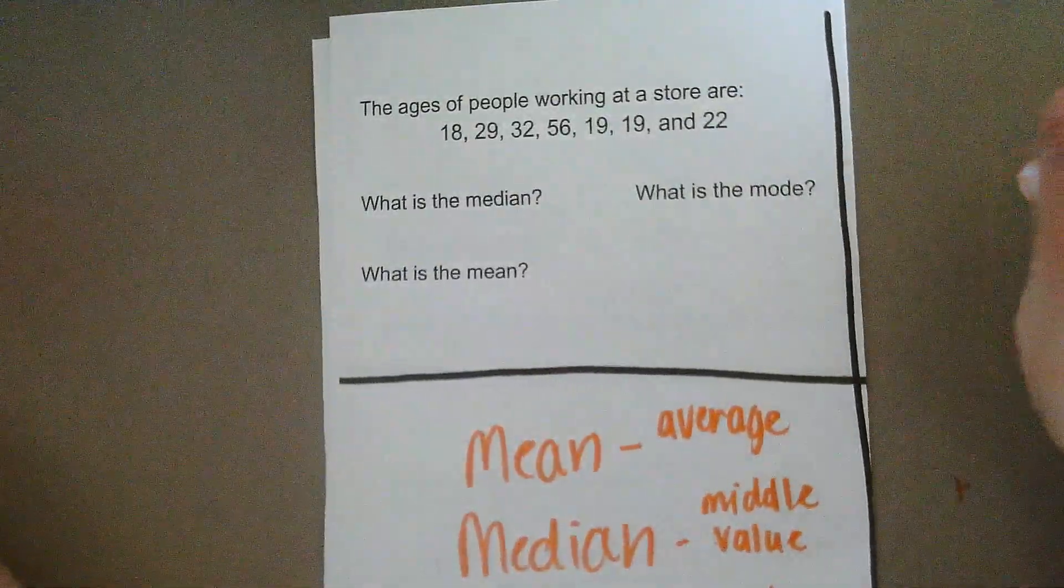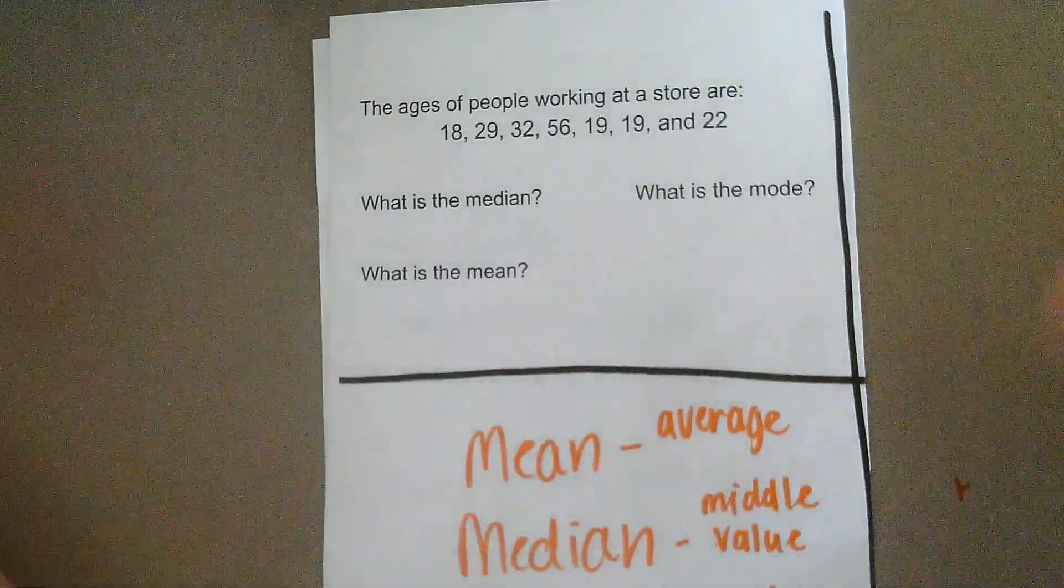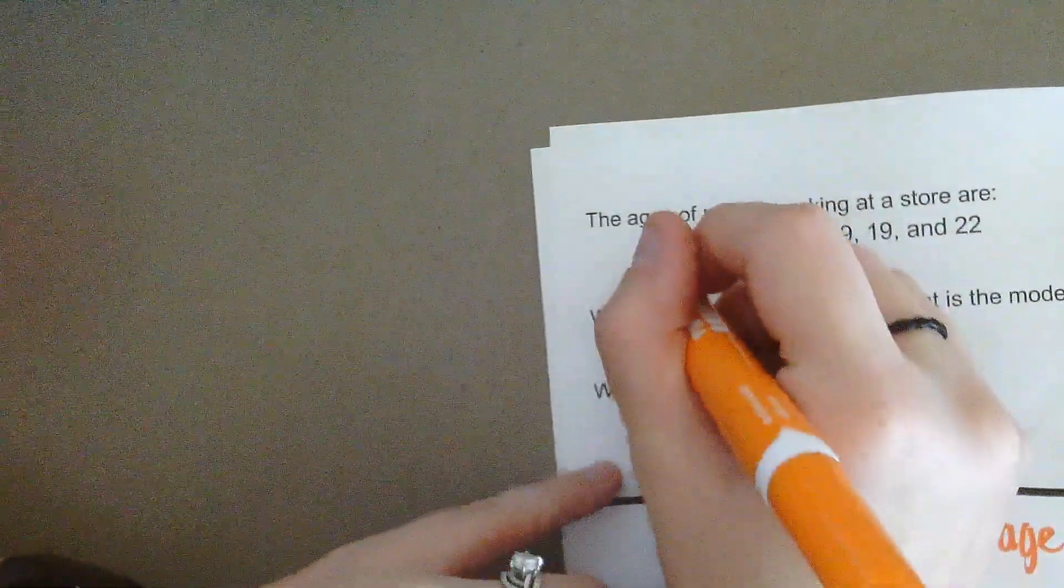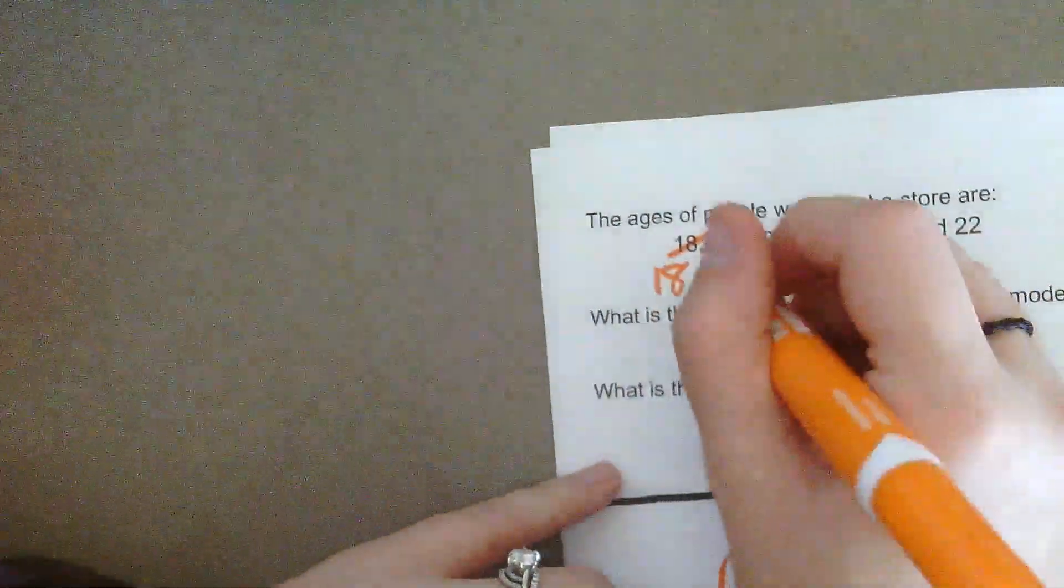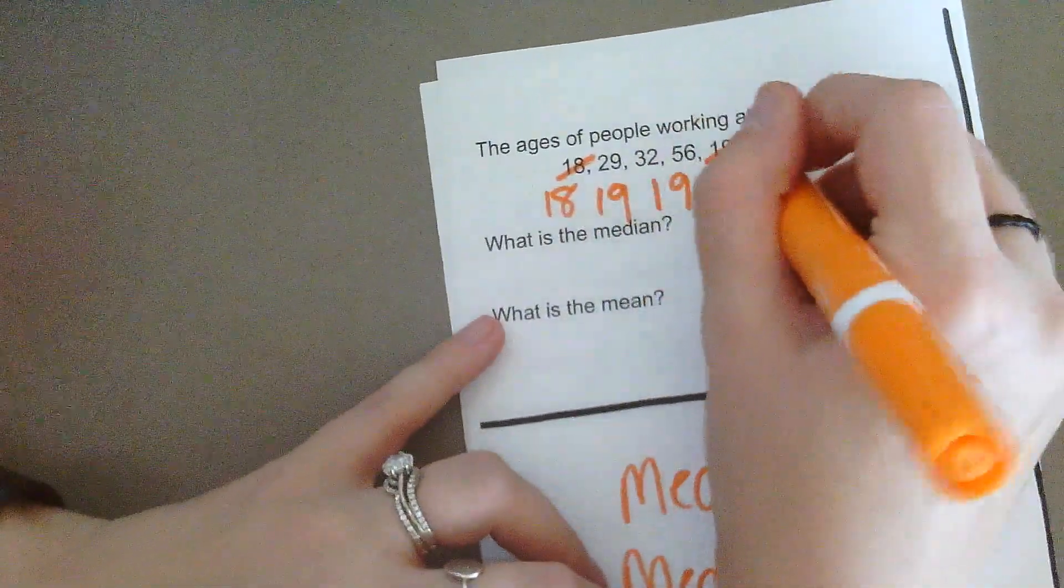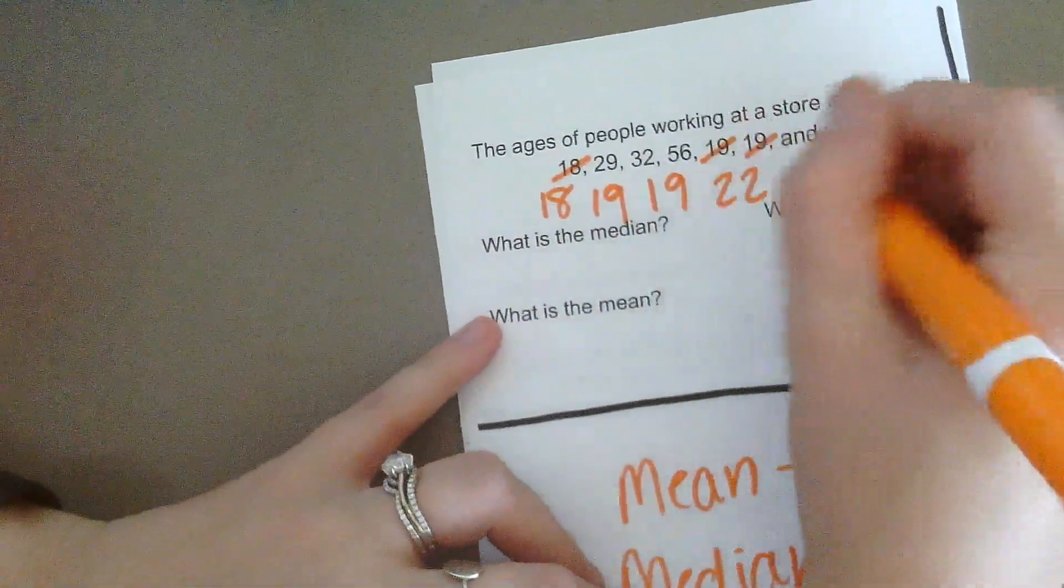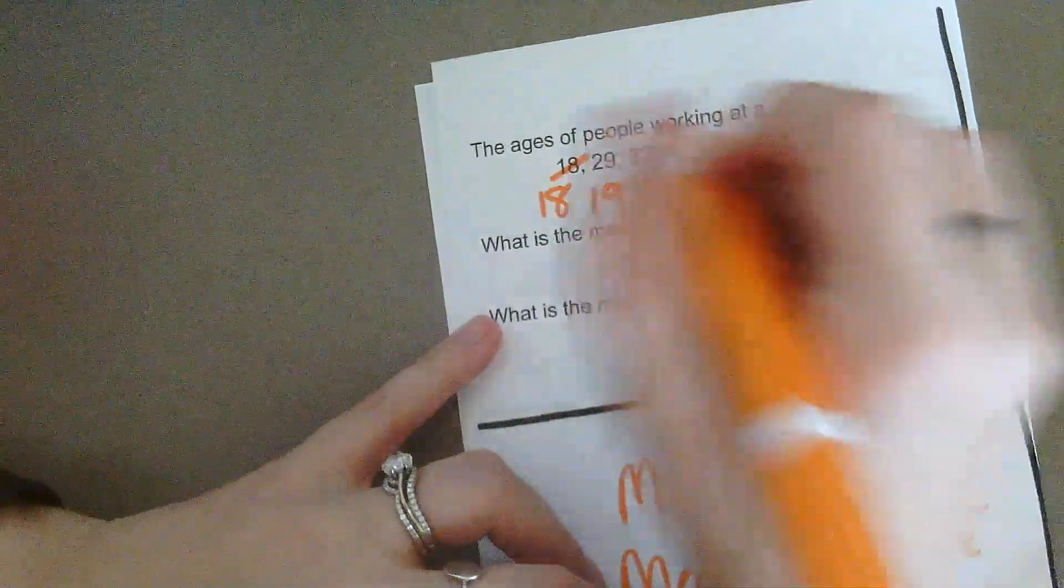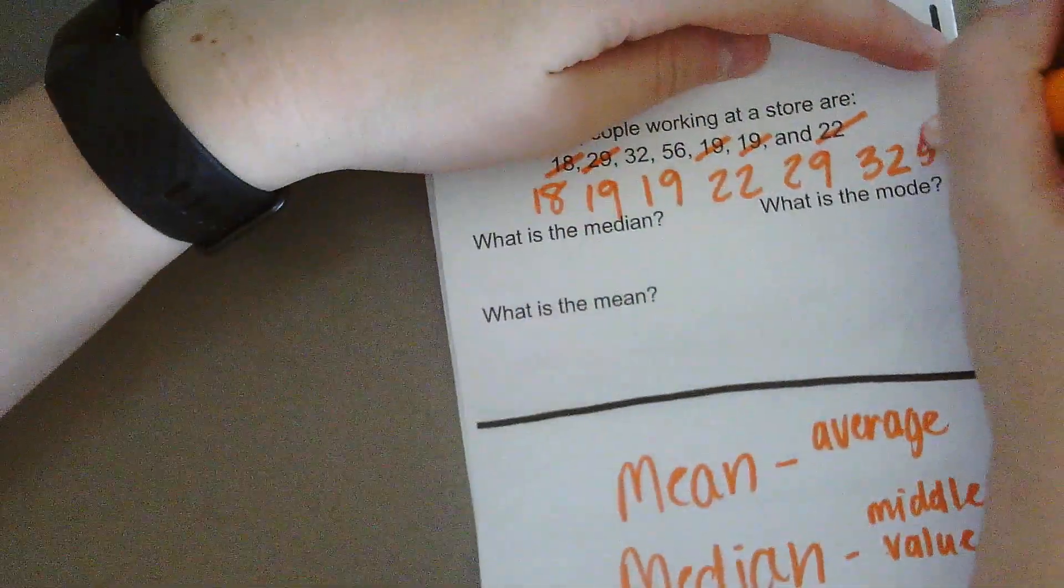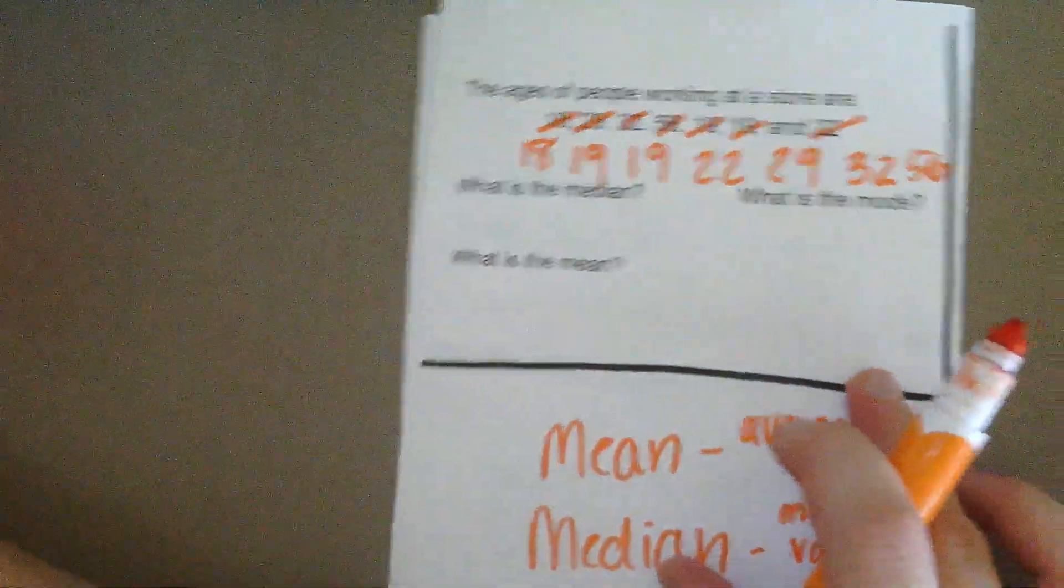So the first thing you're going to want to do is put these all in numerical order, from smallest to largest. So, we're going to start with 18, we're going to do 19, the second 19 year old, 22, 29, 32, and the 56 year old. So we've got all of our ages now in order.